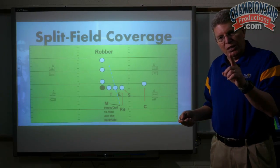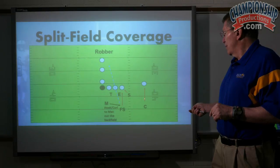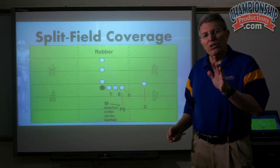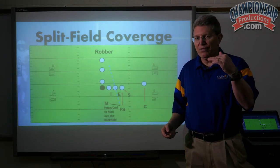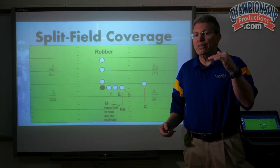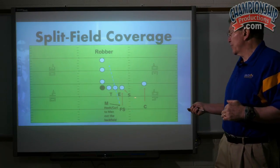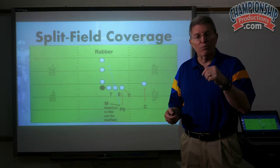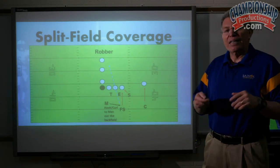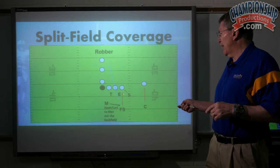That's the first scenario. Tight end comes up, number one receiver goes deep, number two runs a five-yard out. Remember, he hasn't come to seven yards, so he hasn't broken past the line of demarcation. So now when the free safety reads the tight end and the number two receiver breaking out, that's his call. He calls 'out,' and that alerts the Saint that you have a threat to the flat.